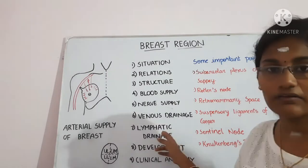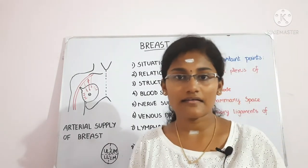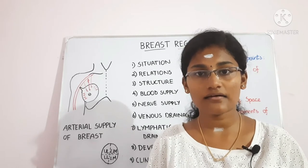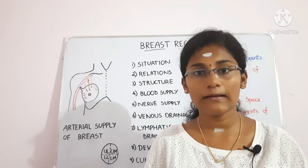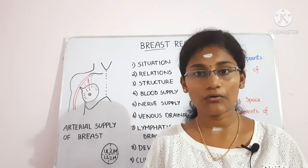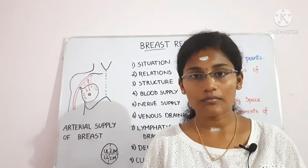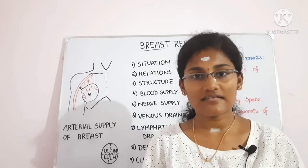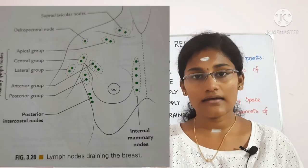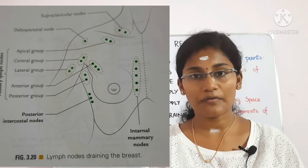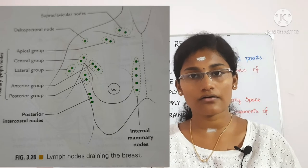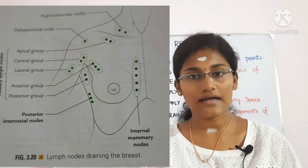The lymphatic drainage is very important because cancer spreads from the breast to other organs through it. It is studied under lymph nodes and lymphatics. The breast is supplied by five groups of lymph nodes: the axillary group, posterior intercostal group, internal mammary group (also called parasternal or anterior thoracic lymph nodes), cephalic (deltopectoral) lymph nodes, and supraclavicular lymph nodes.